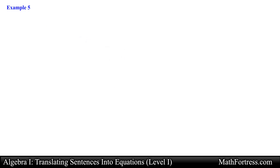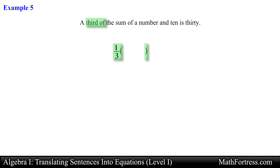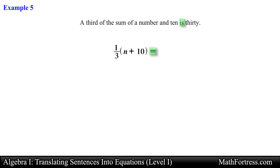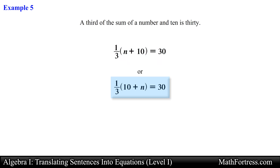Now: 'A third of the sum of a number and 10 is 30.' This seems similar to the previous example, but it's actually different and requires the use of grouping symbols. We first have a product because of the keyword 'of,' so it's one third times the sum of a number and 10, using grouping symbols. Then we include the equal sign because of 'is,' followed by 30. The final expression is one third times the quantity (n plus 10) equals 30, or one third times (10 plus n) equals 30. Make sure you read the sentence carefully to understand when grouping symbols are needed.